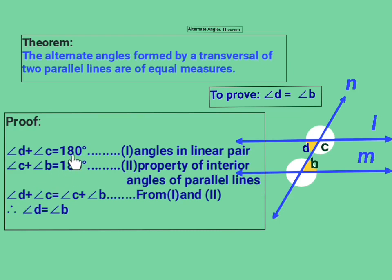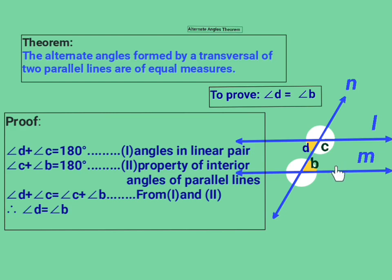From equation one and equation two, the right-hand sides are equal. Equating their left-hand sides, we get angle D plus angle C equals angle C plus angle B. Cancelling angle C from both sides, we get angle D equals angle B — hence the proof. This same reasoning can be applied to the remaining alternate angles of the two parallel lines and their transversal. Please revise both theorems. Thank you.